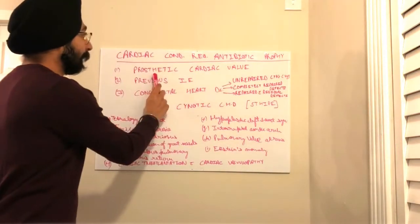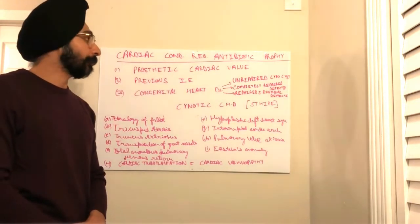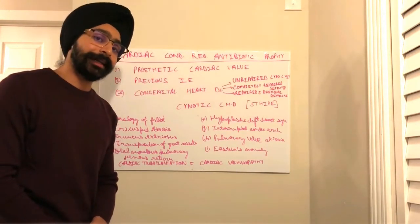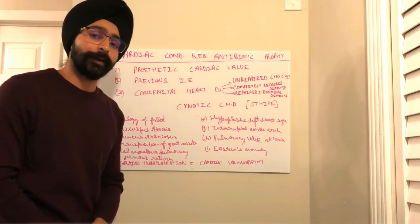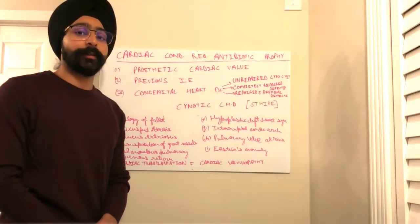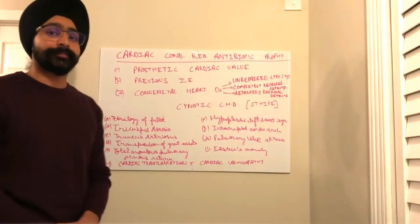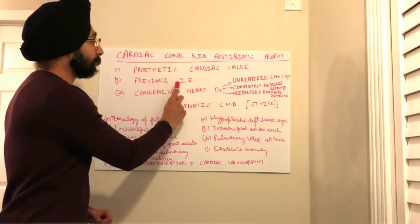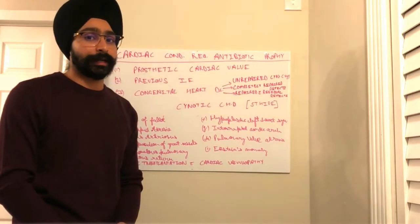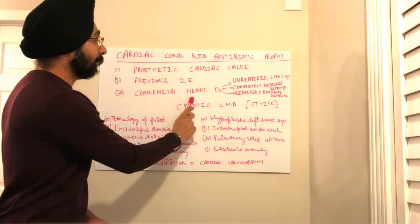There are certain cardiac conditions where patients are at greater risk for infective endocarditis. The first is prosthetic cardiac valve — if a patient has undergone cardiac valve replacement surgery and the valve is made of prosthetic material, antibiotic prophylaxis is required before certain dental procedures. The second condition is previous infective endocarditis — if a patient ever had infective endocarditis, that patient will always require antibiotic prophylaxis.